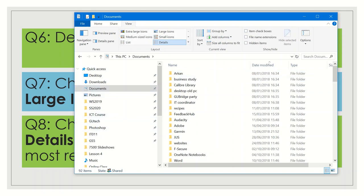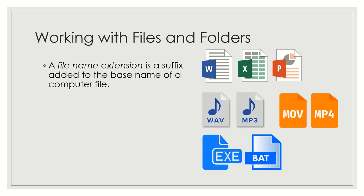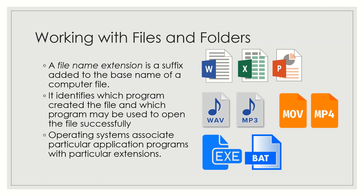Let us now discuss the file name extension. The file name extension is a suffix added to the base name of a computer file and separated from the base name by a dot. For example, the file name is sample1 and the extension is .txt. Operating systems and application programs use file name extensions to recognize the format of a file, identify which program created it, and determine which program may be used to open it. Most operating systems automatically associate specific application programs with specific extensions, making it possible to double-click a file to open it — for example, double-clicking an .mp3 file will open Windows Media Player.